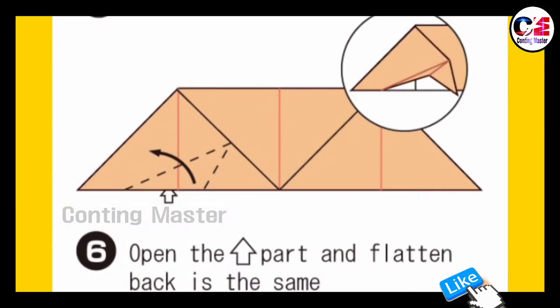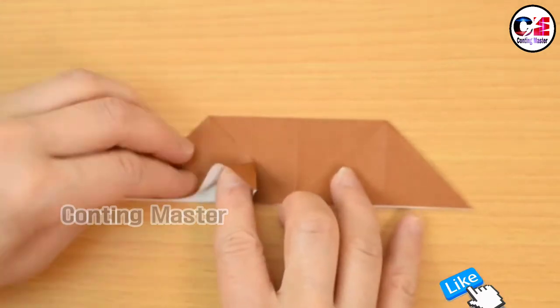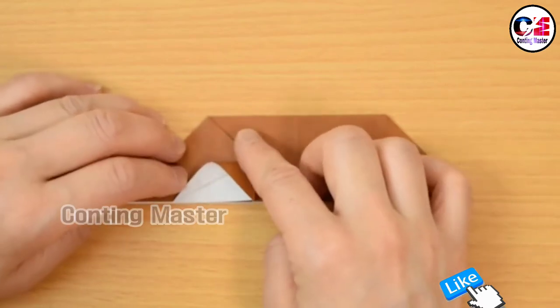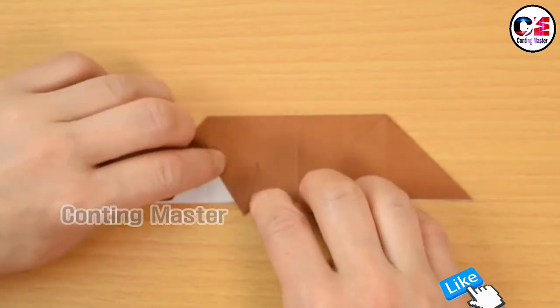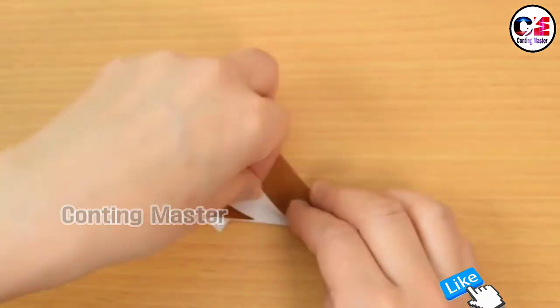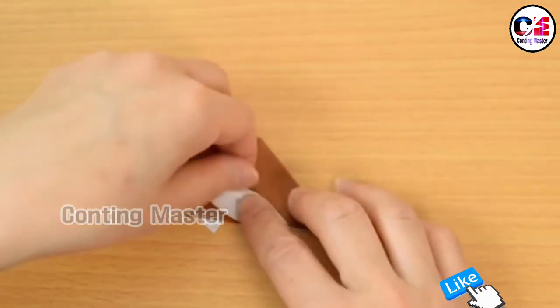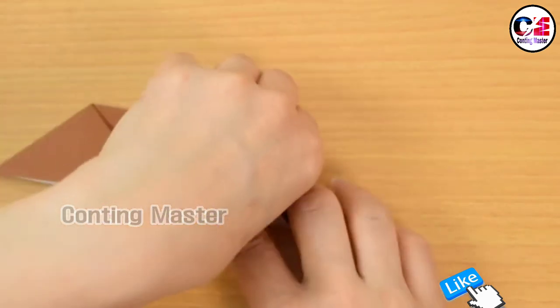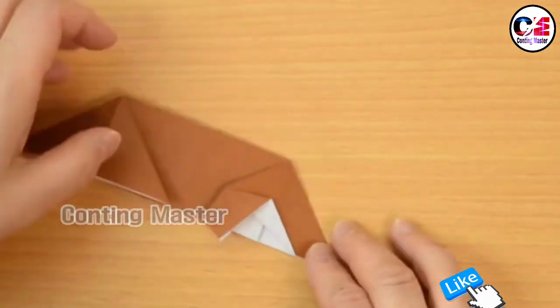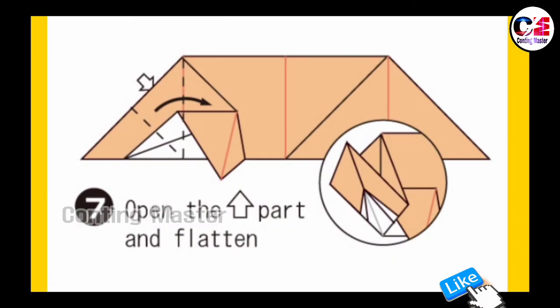Step 6: open the upper part and flatten, back is the same. Step 7: open the upper part, fold back in half. Open the upper part and flatten.